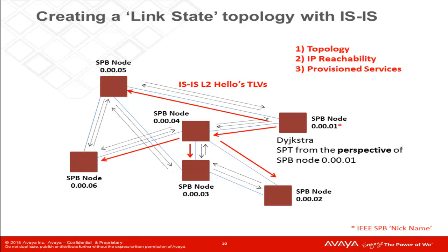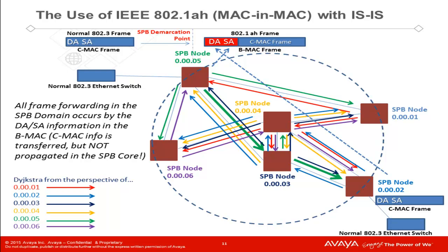It is an alphanumeric string which uniquely identifies an SPB node within the domain. Also, each SPB node is identified by an actual Ethernet MAC address known as the BMAC, or backbone MAC address, which is provided by 802.1AH. Each SPB node also runs Dijkstra from its perspective, resulting in shortest path trees to each SPB node within the network. Here we show each tree in a color-coded fashion for clarity. As the 802.3 frame is ingested into the SPB network, it is encapsulated into an 802.1AH frame. The destination and source BMAC addresses of the SPB nodes are used as the universal delivery labels.